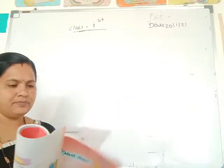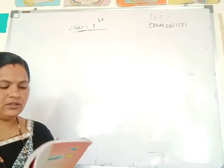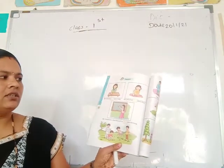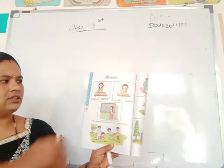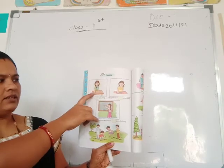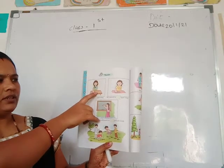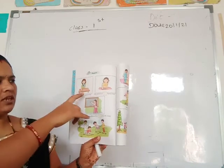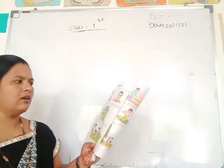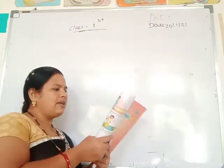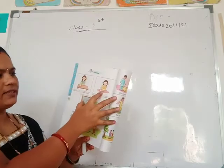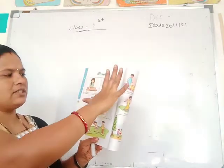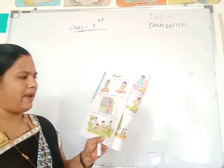Then the next point — measure. You measure this table: how many spans long? See this: 1, 2, 3, 4 — means this table is 4 spans long. My pencil — how many spans long? See this pencil — the pencil is only 1 span long.